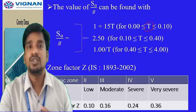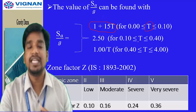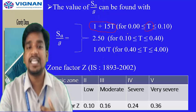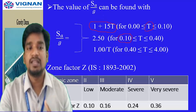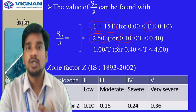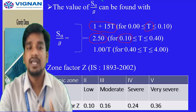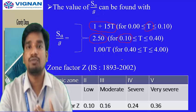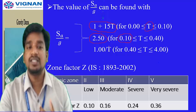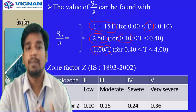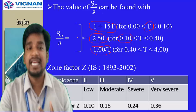Sa/g is calculated based on the natural period T using these formulas in IS 1893:2002: if T is between 0.002 and 0.10 s, Sa/g = 1 + 15T; if T is between 0.1 and 0.4 s, Sa/g = 2.50; if T is between 0.4 and 4 s, Sa/g = 1/T. So Sa/g is computed based on the range of T.